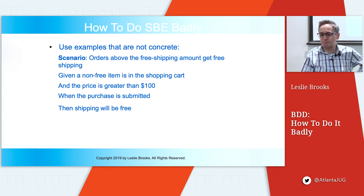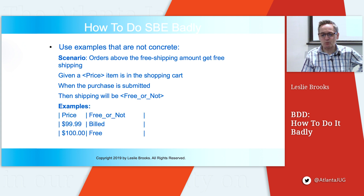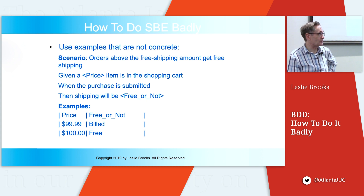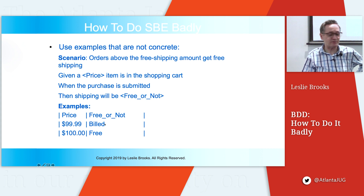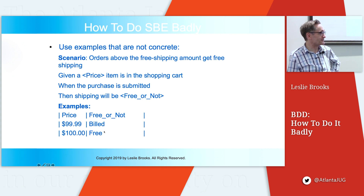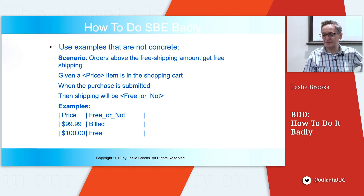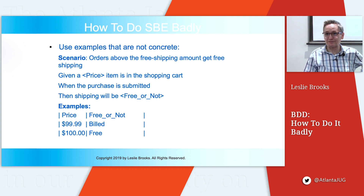Your examples must be concrete. Here is the same requirement with two concrete examples: $99.99 — the shipping will be billed; $100.00 — the shipping will be free. How likely is it that developers will get this wrong? It's very, very difficult to misunderstand that. A very clear requirement like this gives the product owner greater confidence that developers will actually deliver what the product owner wants.